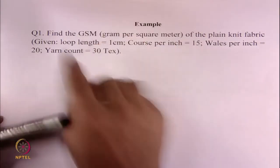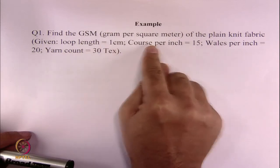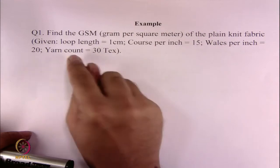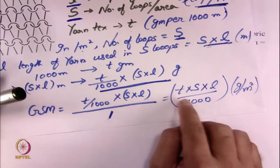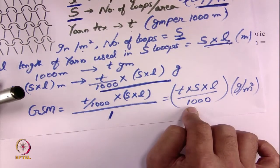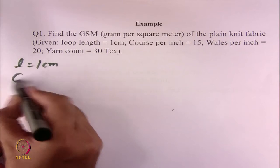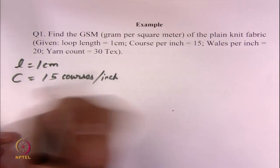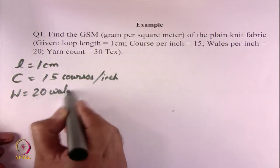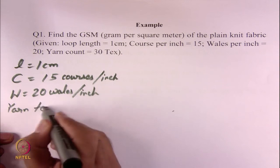Find the GSM — gram per square meter — of the plain knit fabric. Given: loop length is 1 centimeter, courses per inch is 15, wales per inch is 20, and yarn count is 30 tex. As per the formula of GSM, we have to use the equation GSM = T × S × L / 1000. The values given to us are: loop length is 1 centimeter, capital C is 15 courses per inch, capital W is 20 wales per inch, and yarn tex T equals 30.